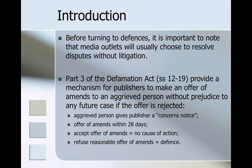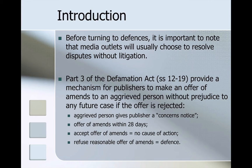Part three of the Defamation Act provides a mechanism for publishers to make an offer of amends to an aggrieved person without prejudice to any future case if the offer is rejected. The aggrieved person — that is, the person who believes they have been defamed — gives the publisher a concerns notice outlining their concern. The publisher then has an opportunity to make an offer of amends within 28 days. If the aggrieved person accepts the offer, there is no cause of action. If they refuse a reasonable offer, that gives rise to a defence on the part of the publisher, providing an incentive to resolve matters out of court before they go to trial.